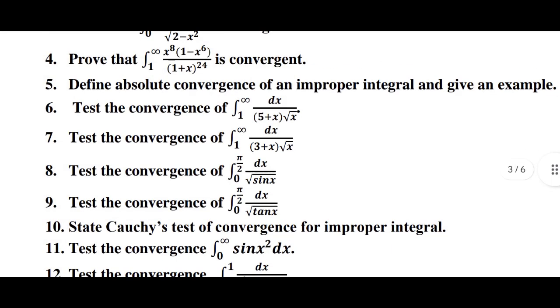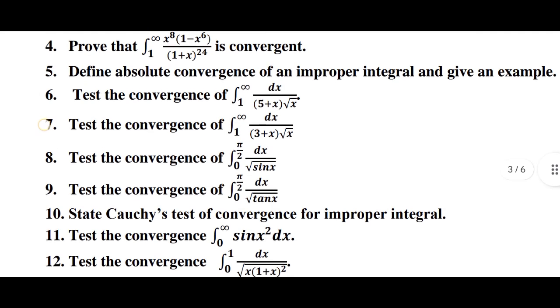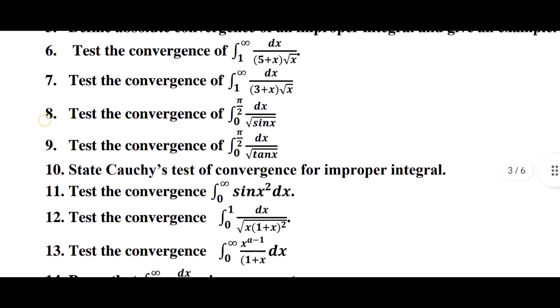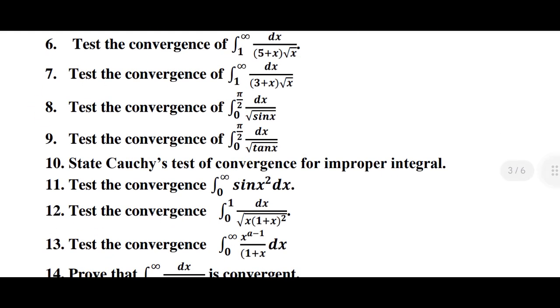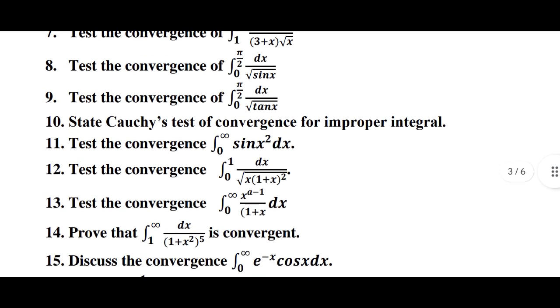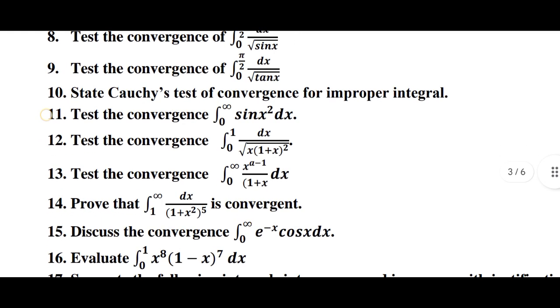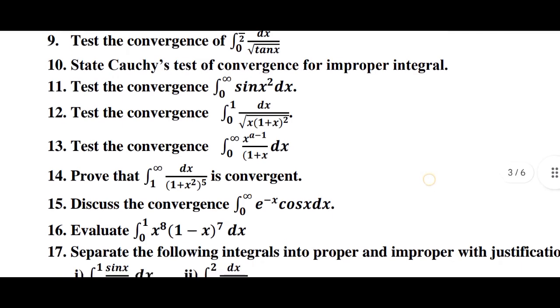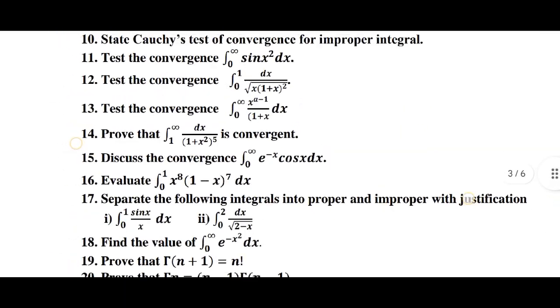Tenth question: State Cauchy's test of convergence for improper integral. Next, again they told to test the convergence. In the two mark questions you will get most of the questions on test the convergence. Next, prove that integration from 1 to infinity, dx divided by 1 plus x square bracket complete raise to 5 is convergent. Most of the questions are from convergence. These are your two mark questions.